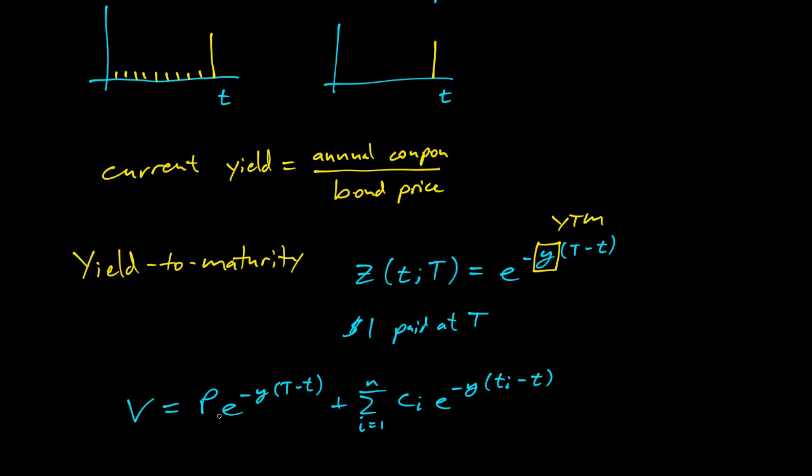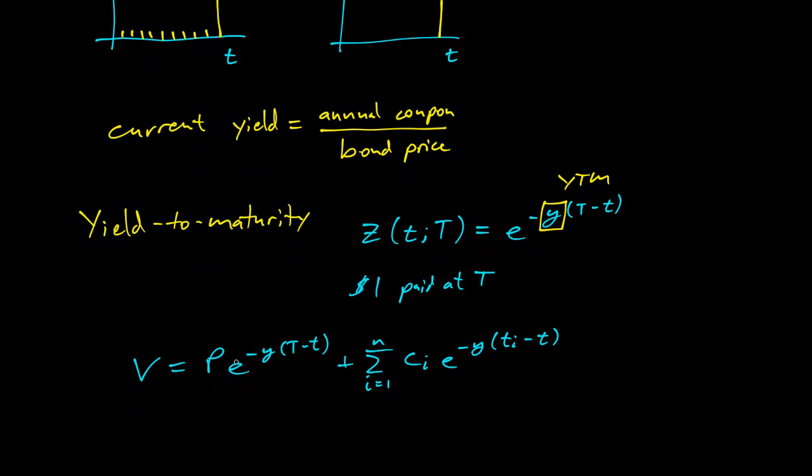So each one has a different time that it's being paid. And so the principal discounted to the present, the coupons. This is the principal, and these are the coupons. And discounting everything at the same yield to maturity, Y, back to the present, will give the current price.